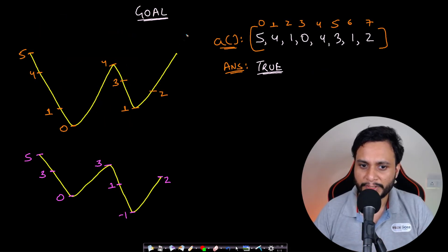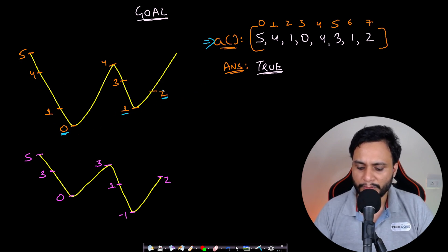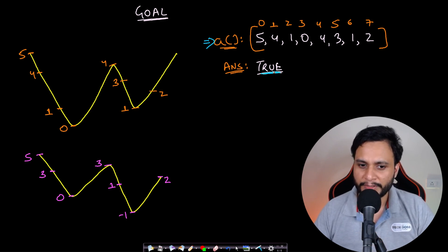Now let's understand the optimal approach visually. Given a curve representing the array elements, we want to find if any strictly increasing triplet exists. For example, if we see values 0, 1, 2 forming a strictly increasing sequence, the answer is true. We just need to return true or false — not the exact triplet.